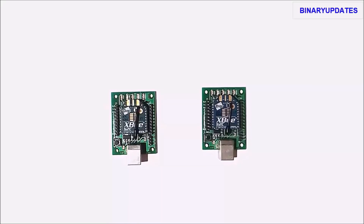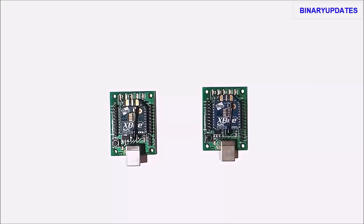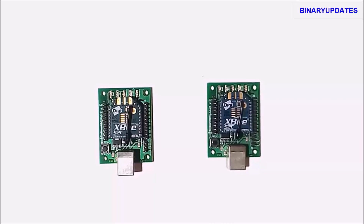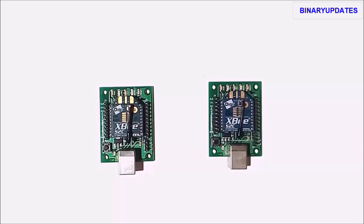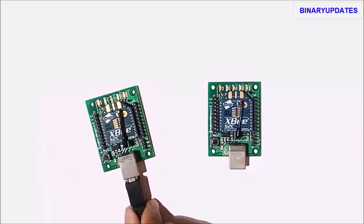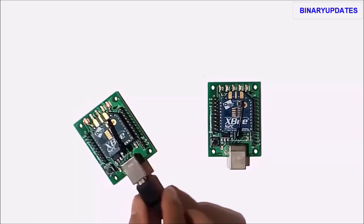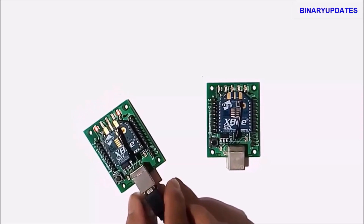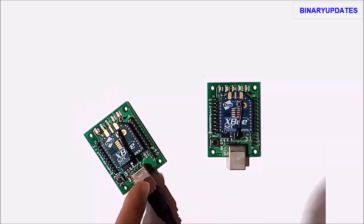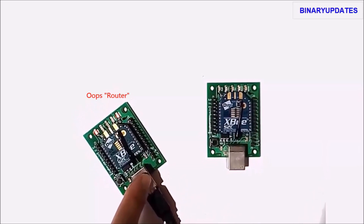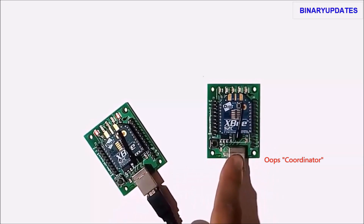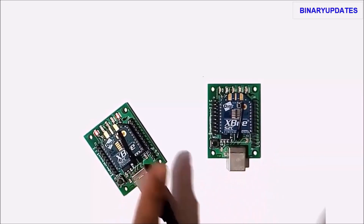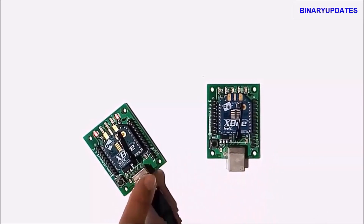Here we have two XBee S2C modules. We are going to connect the first XBee module to the first ZigBee. We are going to configure one ZigBee in coordinator mode and the other ZigBee in router mode.